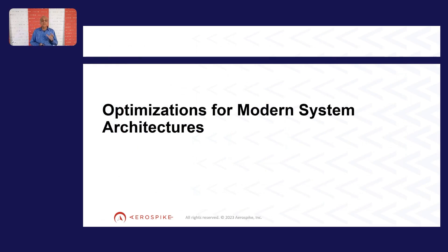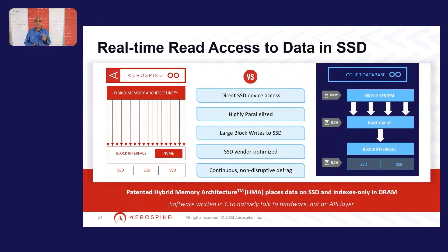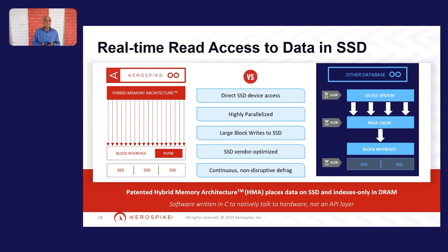All of these strong consistency algorithms and distributed database systems are great, but how fast can you go? This is where Aerospike specifically shines. We have built our system to take advantage of hardware advances over the years. A little about storage advances: in Aerospike, we can store indexes and data in different kinds of storage devices. In what we call our hybrid memory architecture, Aerospike stores the index in DRAM and the data is stored in SSDs.